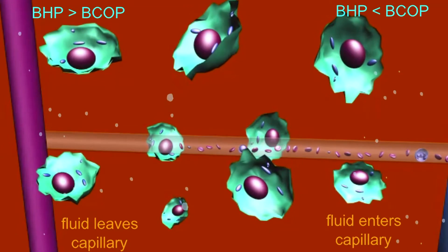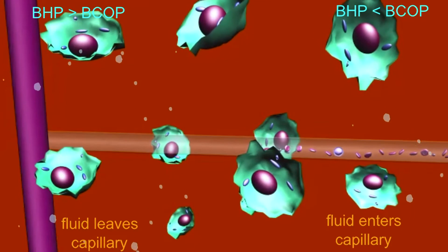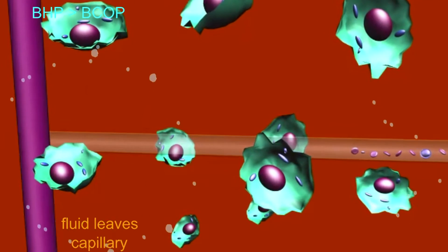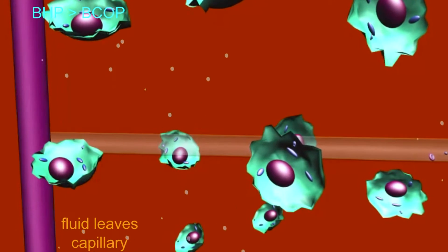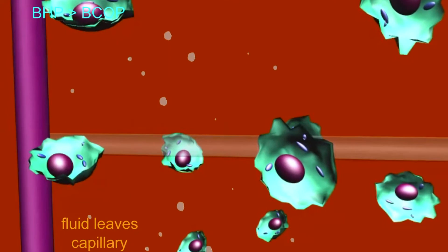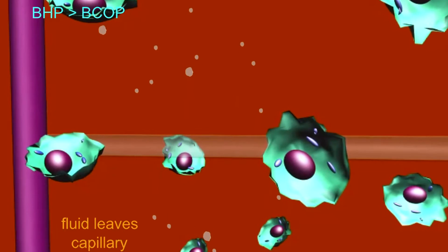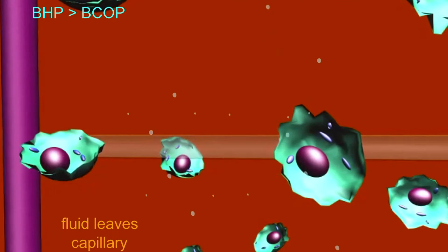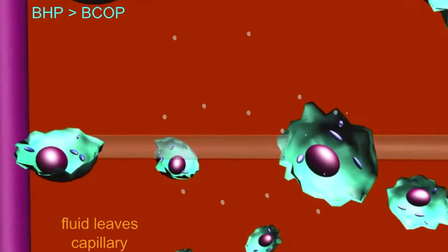this pressure exceeds the blood colloid osmotic pressure, which pushes fluid into the capillary from the tissue. Because the outward-pushing blood pressure exceeds the inward-pushing osmotic pressure, the net filtration pressure is to push fluid from the capillary, and about 20 liters of fluid will be forced from capillaries per day.